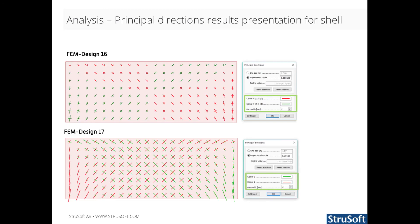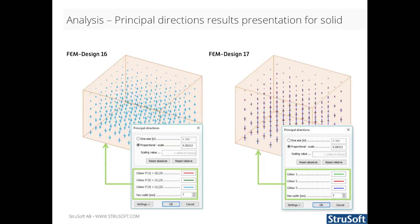Coloring of the principal stress, moment, and normal force results of shells has been modified to make the results more clear. The algebraically larger value will be the first principal value, indicated by default with green color. The algebraically smaller value will be the second principal value, indicated by default with red color. The display options dialog for principal stresses in solids has been modified in a similar way, but in this case three colors can be set for the three principal stresses.